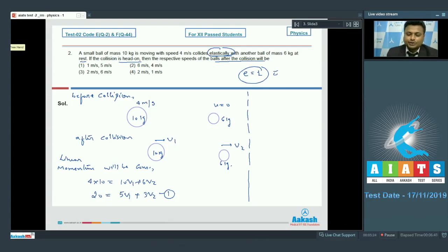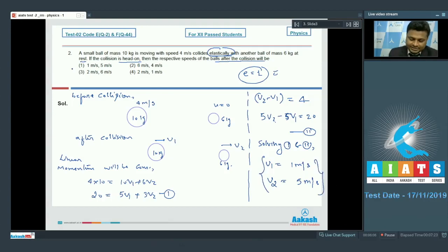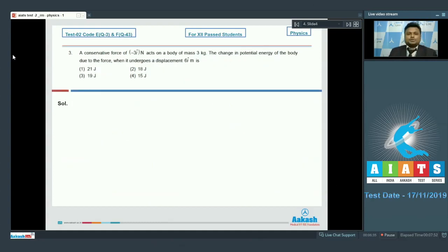Now one more information is given that E equals 1. E equals 1 means velocity of separation is equal to velocity of approach, means we can write V2 minus V1, that is velocity of separation, should be equal to velocity of approach, that is simply 4. Multiplied by 5 both sides in order to solve we get 5 V2 minus 5 V1 equal to 20. Solving 1 and 2, we have the value of V1 and V2, that is V1 equal to 1 meter per second and V2 is 5 meter per second. So this is our final answer, we can say that option number one is absolutely correct.